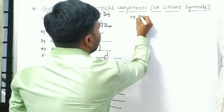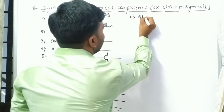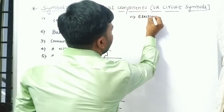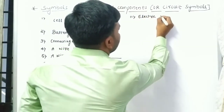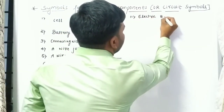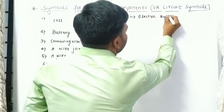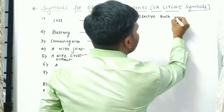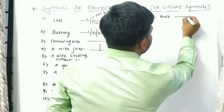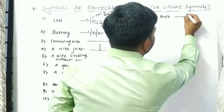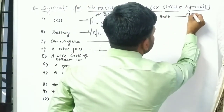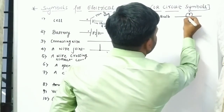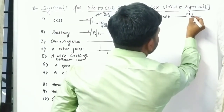The next electrical component is the electric bulb. The symbol for the electric bulb is a circle with a filament shape drawn inside it.